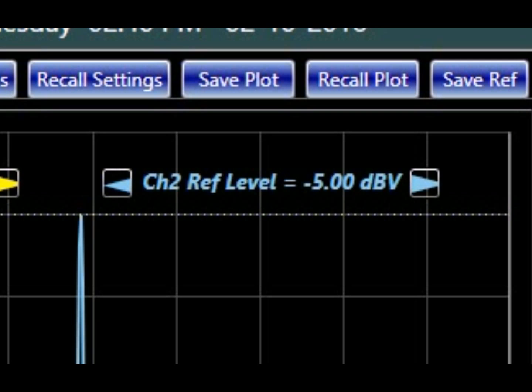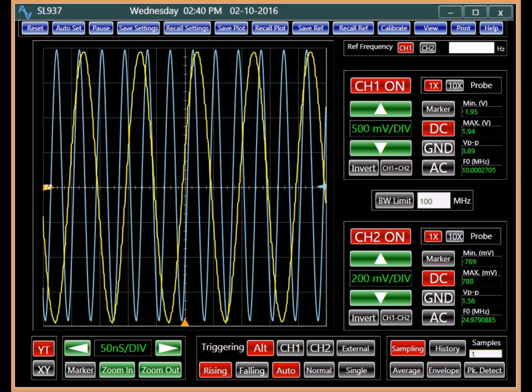Similarly, a minus 5 dBV reference level indicates a 1.6 volts range. We can verify these values with the oscilloscope.